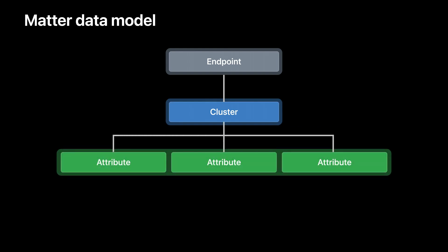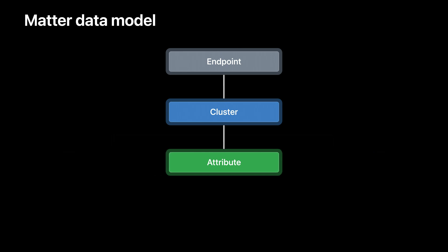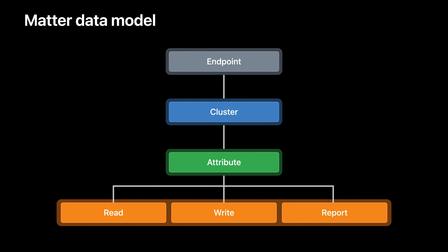A cluster can have one or more attributes. Each attribute represents some state of the accessory. For our light example, the brightness cluster on the light will have an attribute that lets us read and control the brightness of the light. Matter's attributes can be thought of as equivalent to HomeKit characteristics. Each attribute may support a set of actions ranging from reading, writing, and reporting. In our light example, we might want reporting enabled on the on/off cluster to receive notifications from the accessory every time the light turns on or off.